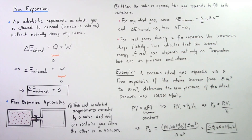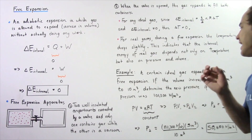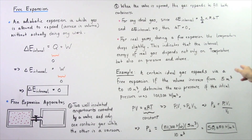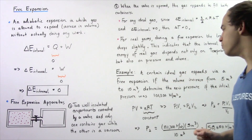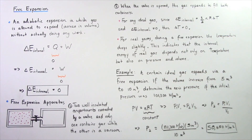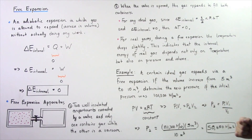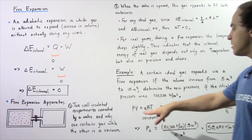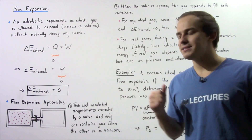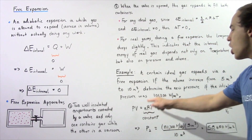Let's look at the following example. A certain ideal gas expands via a free adiabatic expansion. If the volume increases from 5 meters cubed to 10 meters cubed, determine the new pressure if the initial pressure was 101,300 newtons per meter squared. We need to use the ideal gas law: pressure times volume equals N × R × T.